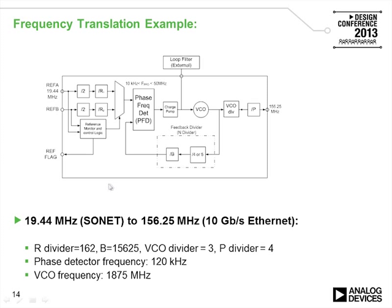An example of a frequency translation system takes a SONET clock running at 19.44 MHz and translates it to 156.25 MHz. The 19.44 MHz reference is applied to the reference dividers and into the PFD, with an on-chip VCO whose output gets divided down to close the loop. The settings shown allow us to go from 19.44 to 156.25 MHz, with the phase detector frequency running at 120 kHz and the VCO frequency at 1.875 GHz.